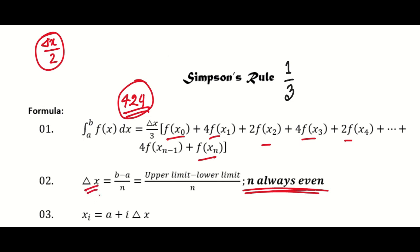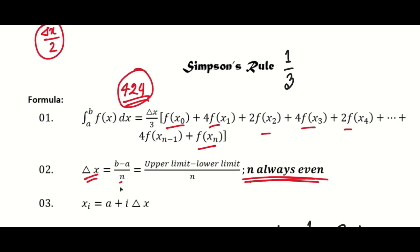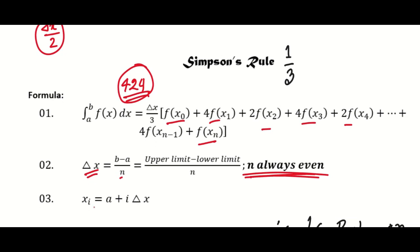In the same way as the Trapezoidal rule, we calculate Δx. Δx equals upper limit minus lower limit divided by n, where the value of n is given. The formula for x_i is: x_i = a + i·Δx, where a is the lower limit and i is the index. We calculate the value of Δx accordingly.